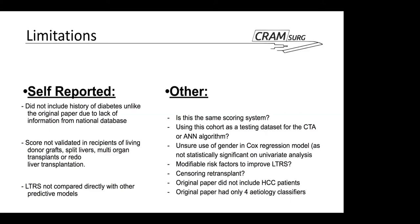Another point worth highlighting is that re-transplant patients are censored from the survival analysis. That makes sense on one side, as you would recalculate the LTRS score at re-transplant. But on the other hand, you are probably interested in knowing how many patients who are re-transplanted die, and how many are actually re-transplanted — data that is not available in the paper. Additionally, the original paper had slightly different inclusion criteria, classifying etiology into four groups, whereas this paper had a broader spread of potential etiologies for liver failure.